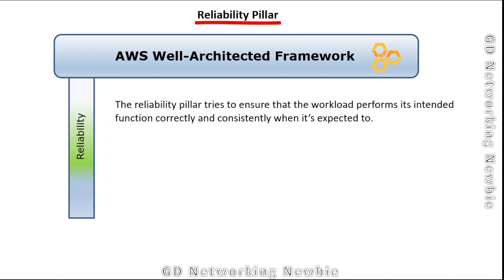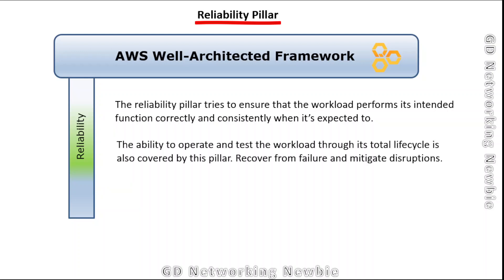The reliability pillar tries to ensure that the workload performs its intended function correctly and consistently when it is expected to. A workload is a collection of resources and code that delivers business value — for example, a marketing website or an analytics platform. This pillar also addresses the ability to operate and test the workload through its total life cycle, and if any failure occurs, the system should be able to recover from it and mitigate disruption.